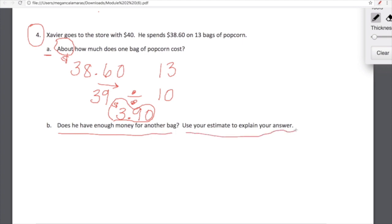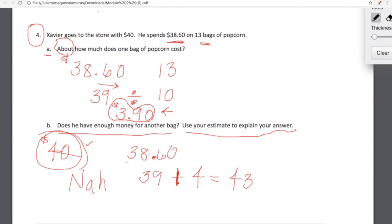Our next question says does he have enough money for another bag? Use your estimate to explain your answer. So he has $40. He bought 13 bags of popcorn for $38.60. If each bag is about $3.90, can we squeeze another $3.90 out of $40? Let's think about that. He spent $38.60, we rounded that to $39. We'll round $3.90 to $4. 39 plus 4 is 43. He only has $40. So the answer is nah. No, he can't afford another bag of popcorn.